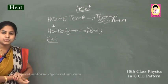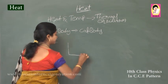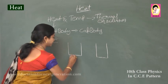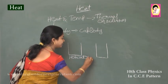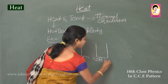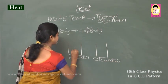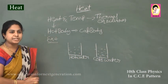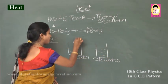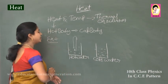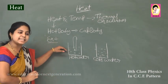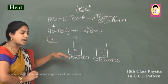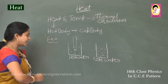All three terms can be explained with one activity. We take two beakers — fill one with hot water and another with cold water. Now take a thermometer and put it in the hot water. You will observe the mercury level rising.